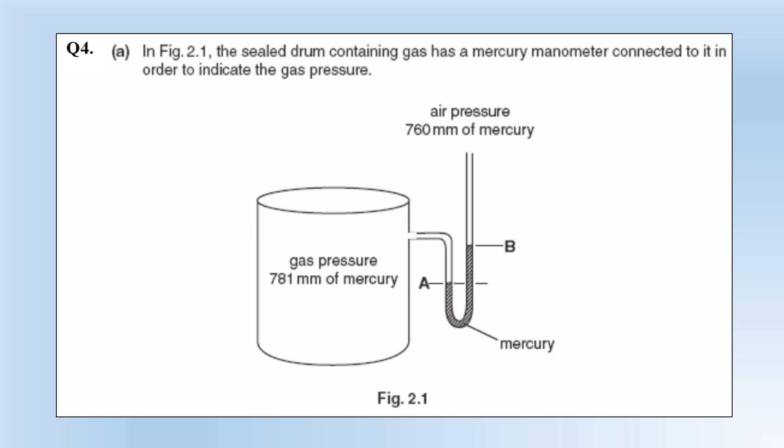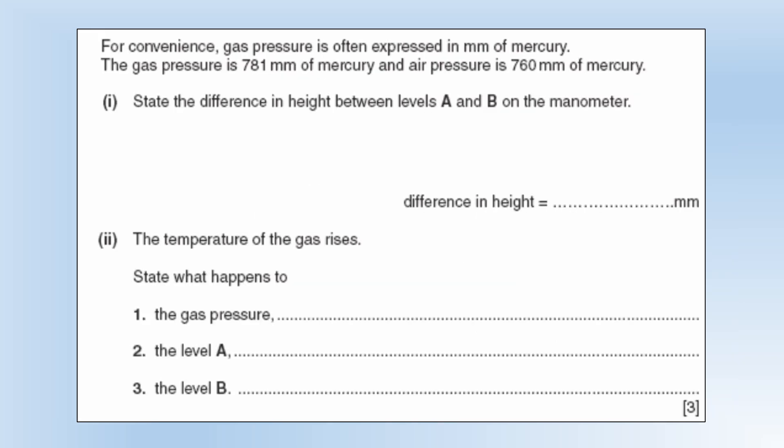The diagram the sealed drum contains gas as a mercury manometer connected to it in order to indicate the gas pressure. Okay so we can see it's at 781 inside but only 760 atmospheric pressure. So for convenience gas pressure is often expressed in millimeters of mercury.